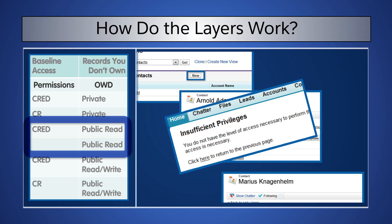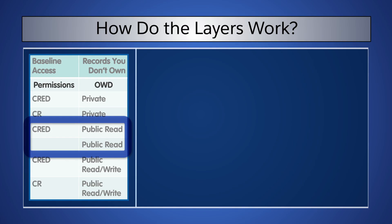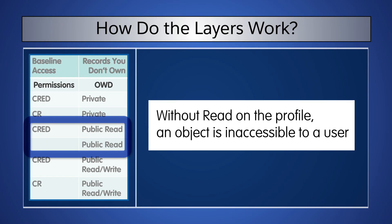If we leave the org-wide default the same, and remove all object permissions — even Read — then Karen will not be able to view any contact records anywhere in the system. Nor can she find them by searching or through reports. Remember, org-wide defaults can never grant users more access than they have through their object permissions.